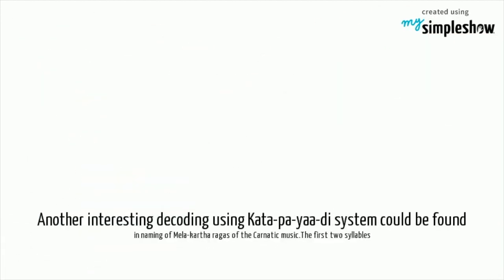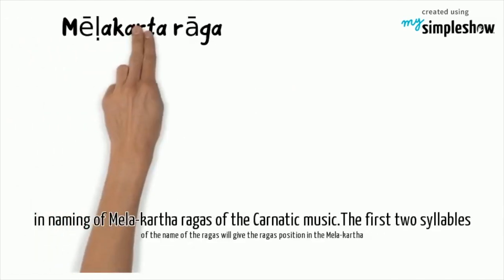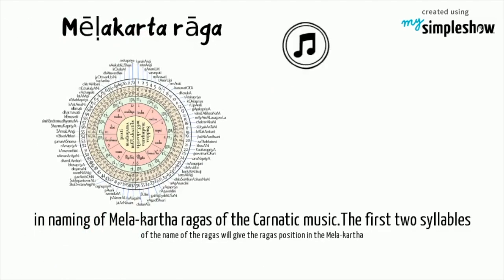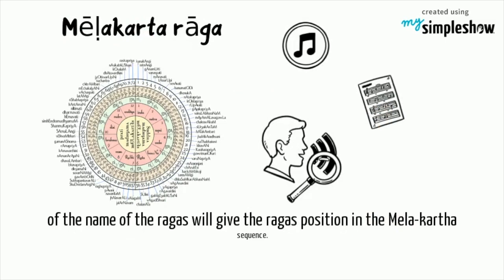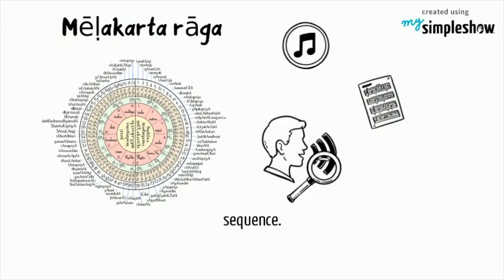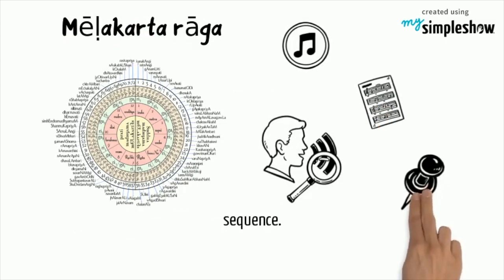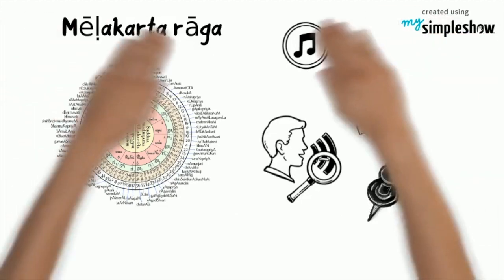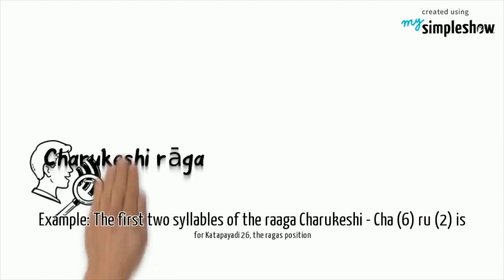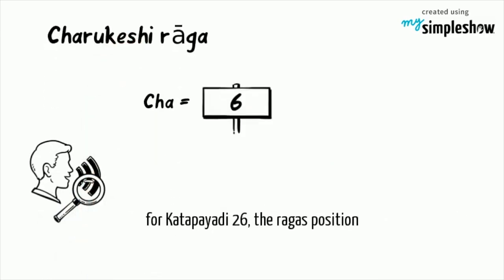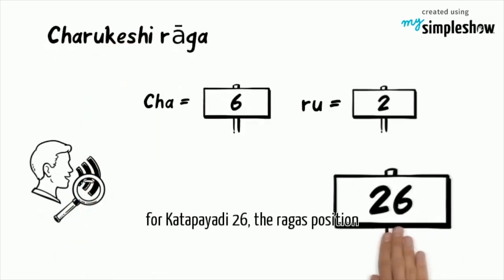Another interesting application of the Kata Piyadi system can be found in the naming of Melakarta Ragas of Carnatic music. The first two syllables of a Raga's name give its position in the Melakarta sequence. For example, the first two syllables of Chaukeshi — 'Cha' (6) and 'Bu' (2) — decode to 26 in Kata Piyadi, which is indeed that Raga's position.